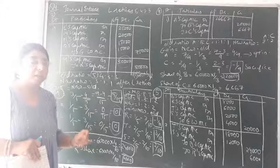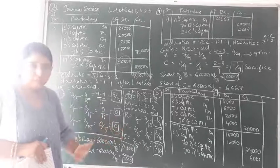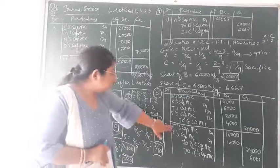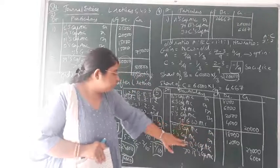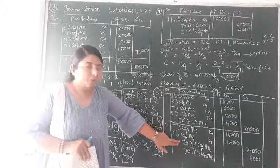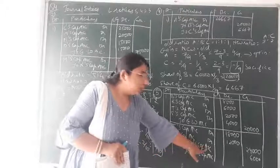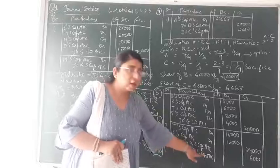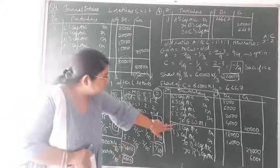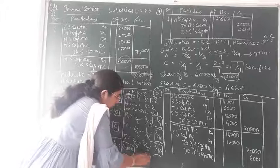We have to find the sacrificing share of partner R. Those partners who are gaining will be debited, and those sacrificing will be credited. The journal entry: T's capital account debit, S's capital account debit — to B's capital account credit (retiring partner) and to R's capital account credit (sacrificing partner). The gaining partners T and S will receive in the ratio 3:2 (from gains of 3/10 and 2/10).